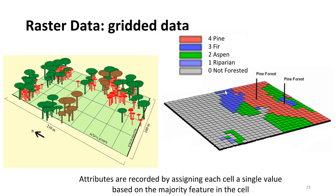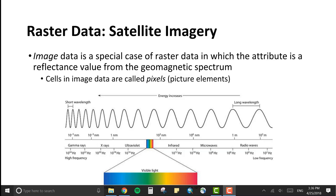For gridded data, if this is our real world example right here, this would be how it would look in raster format. The attributes are recorded by assigning each cell a single value based on the majority feature in that cell. In this case we're looking at different forest types. We have pine, fir, aspen, riparian zones, and then not forested. These 0, 1, 2, 3, 4 - we've corresponded to represent 4 as pine, 0 as non-forested, 2 as aspen. So in our attribute table you would just see 4s, 3s, 2s, 1s, and 0s. But these would all represent pine forest or fir forest or riparian zones.